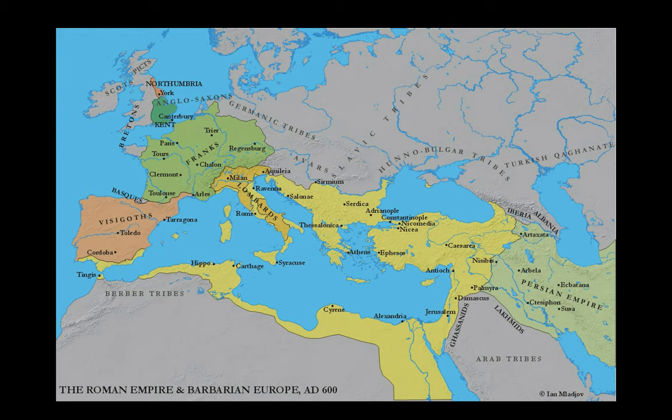In 330, the capital of the Roman Empire — which becomes the Holy Roman Empire, the Christian Roman Empire — gets moved out to Constantinople by Constantine. In a very humble way, he names it after himself, which is modern-day Istanbul.